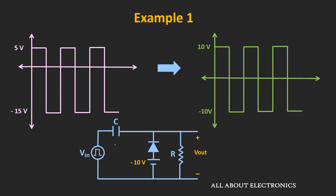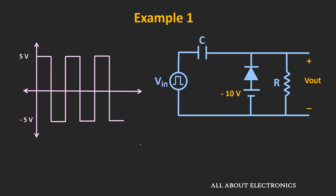That is the essence of this clamper circuit. For example, in this circuit, this diode is conducting during the negative half cycle. But if I change the amplitude of the input waveform or the biasing voltage, it is quite possible that this diode may not conduct at all. Because now, the voltage at the anode of the diode is always less than the cathode. During the positive half cycle, the voltage at the cathode will be 5V, and during the negative half cycle, the voltage at the cathode will be minus 5V.